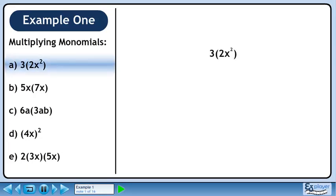In this example, we are going to learn how to multiply monomials. In part a, we will multiply 3 and 2x squared. There is only one step in this expansion. Multiply 3 and 2 to get 6 as the coefficient of x squared.